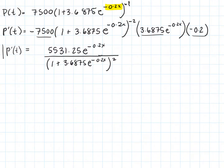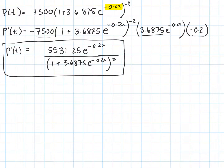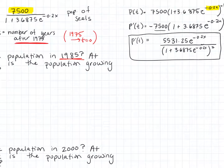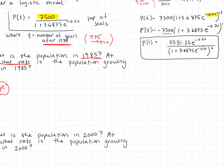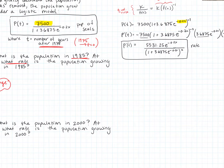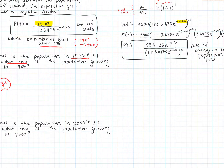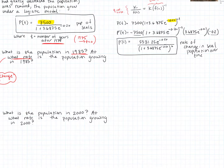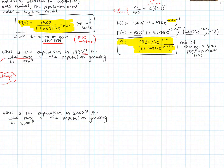So there is our derivative. The population function P of T tells us the population of seals, and P prime of T gives us the rate of change in the seal population over time, measured in years. Now that we have both functions, we can answer any follow-up questions.